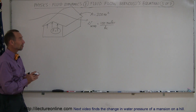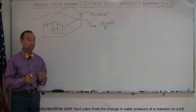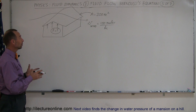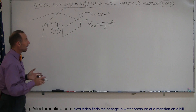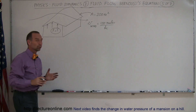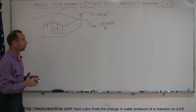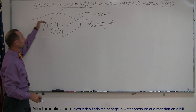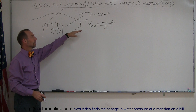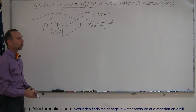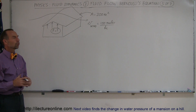Welcome to ElectronLine, another example for you on Bernoulli's equation. Here we have a house with a roof with a surface area of about 200 square meters, which is a typical size house. There's a very strong wind blowing, like a hurricane, with a wind speed of 100 miles per hour. What does that do to the roof?